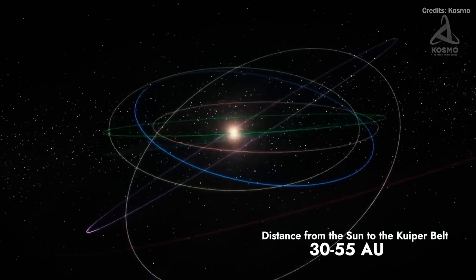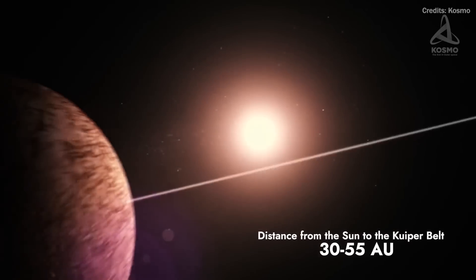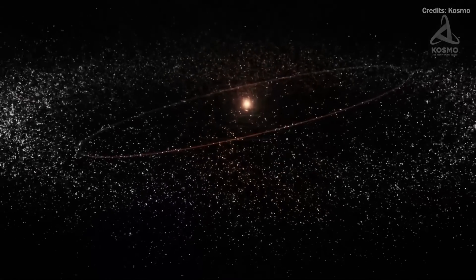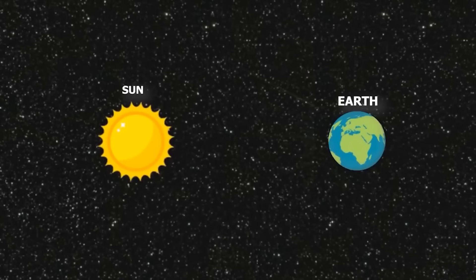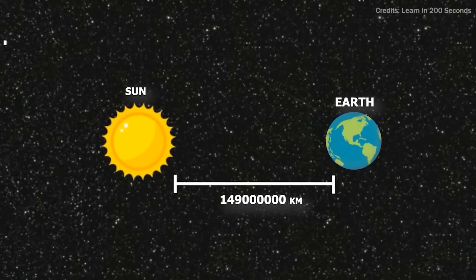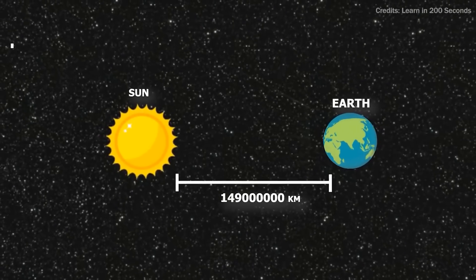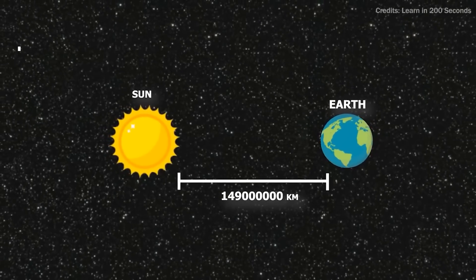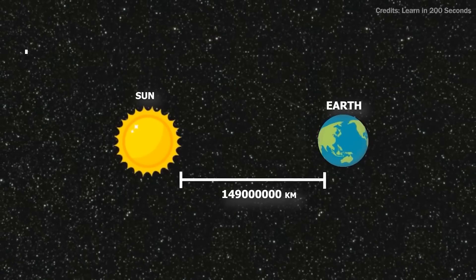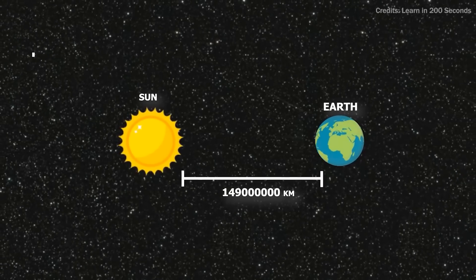Pluto orbits the Sun with hundreds of other objects in the Kuiper Belt, a region between 30 and 55 astronomical units from the Sun. Now, in case you're unfamiliar with space metrics, one AU, or astronomical unit, equals 92.96 million miles from the Sun, or 149.6 million kilometers.